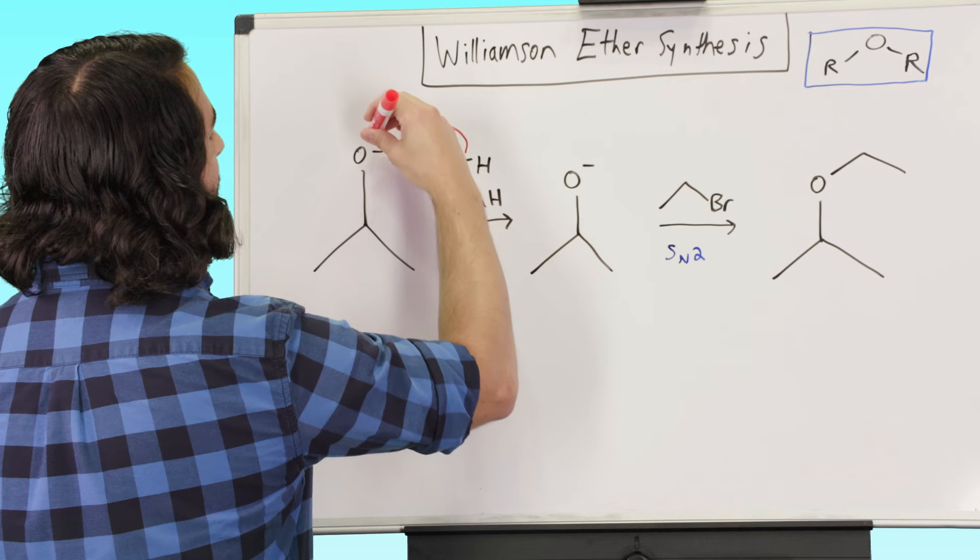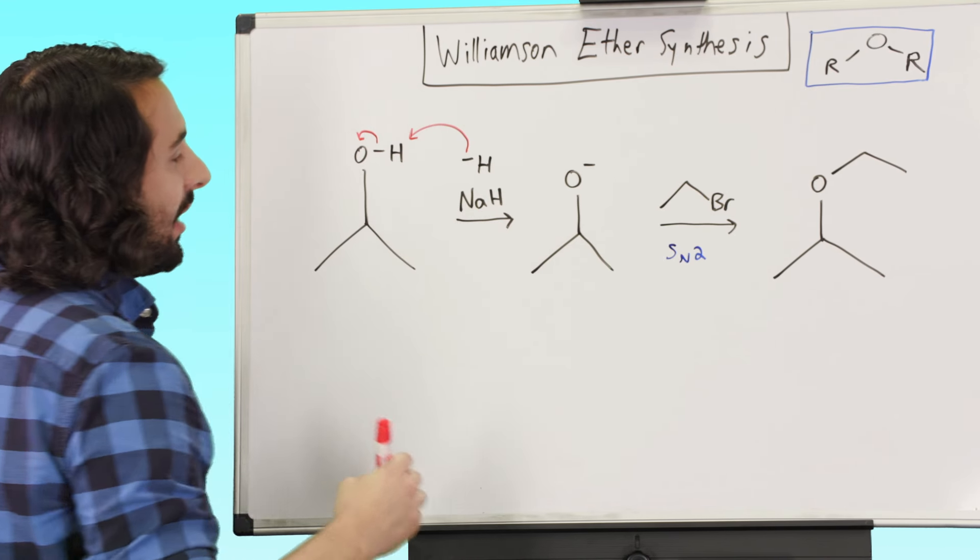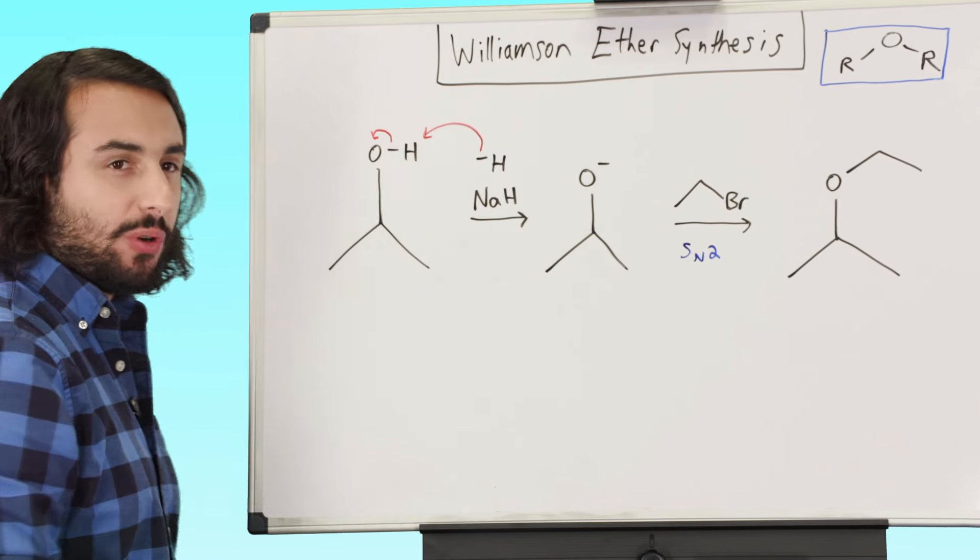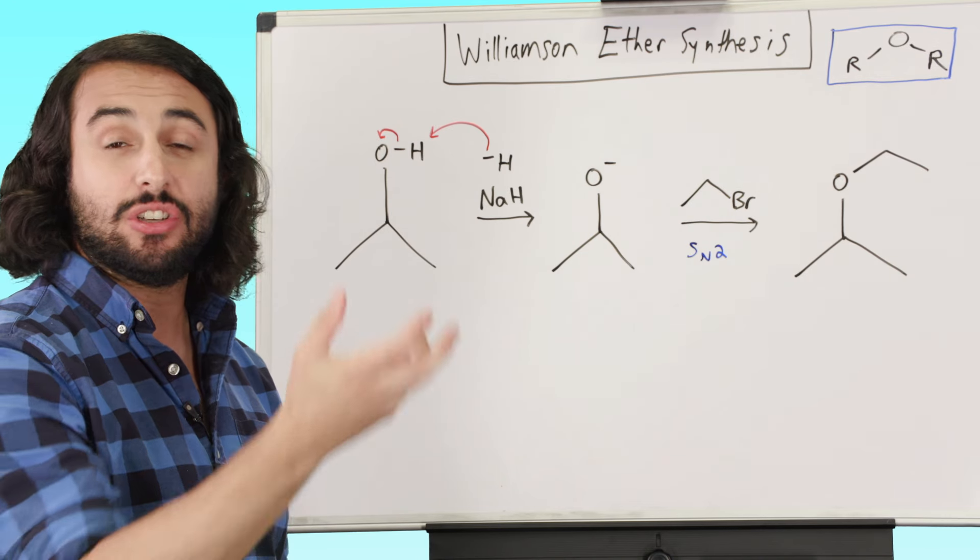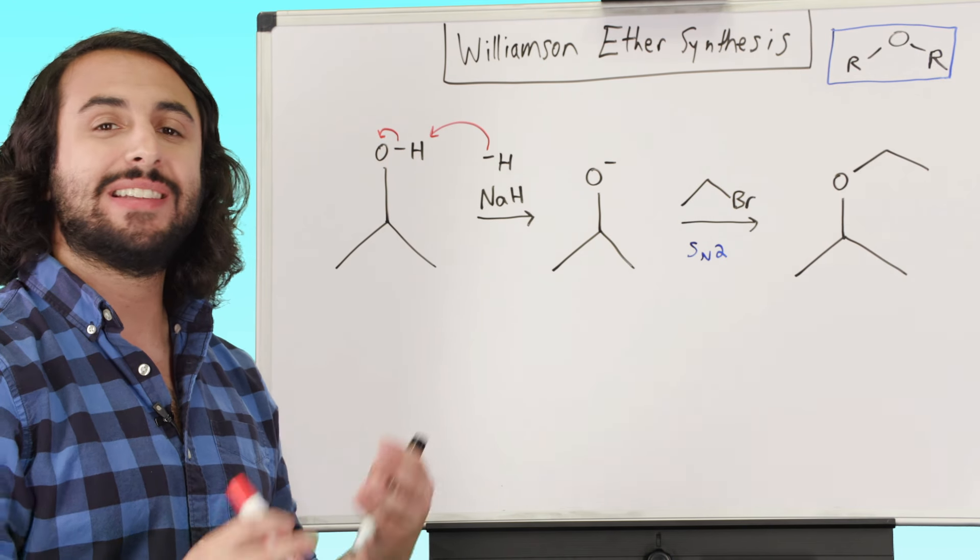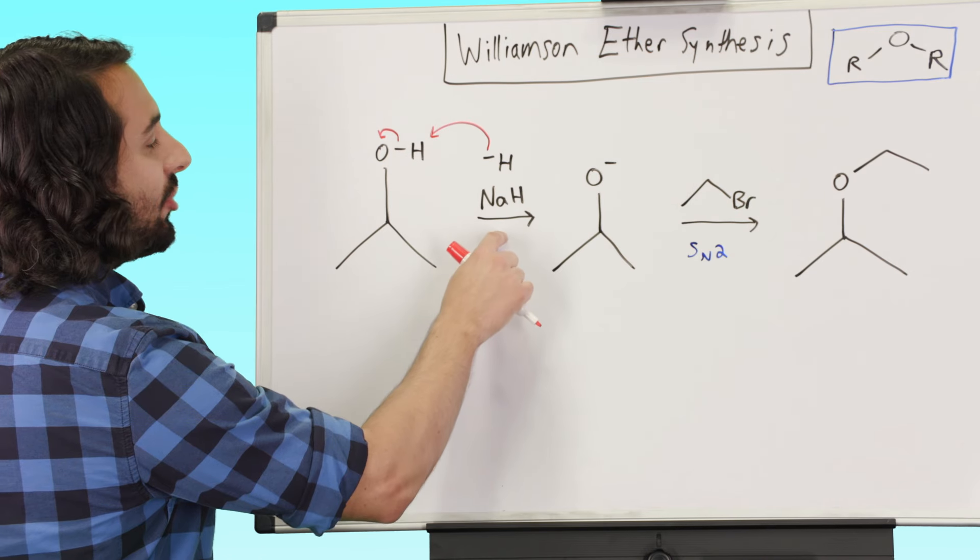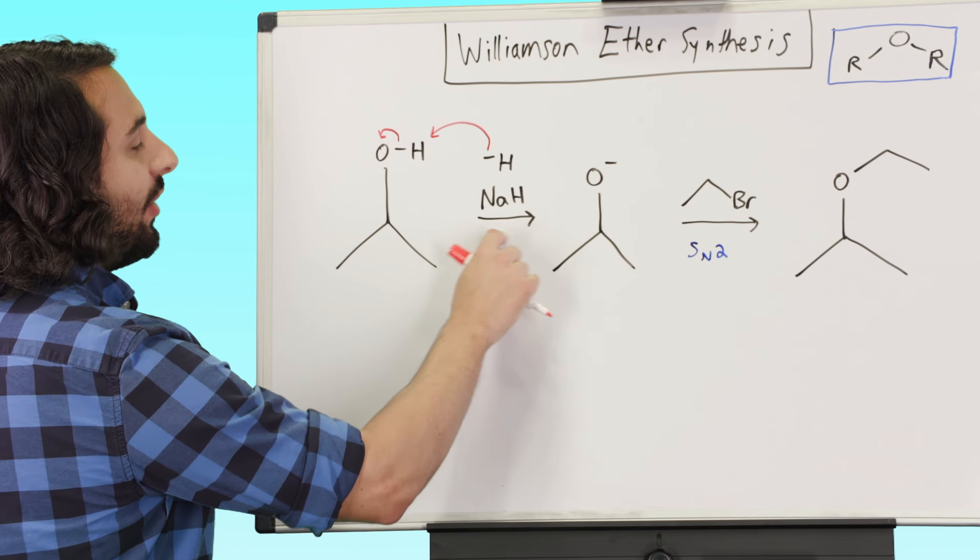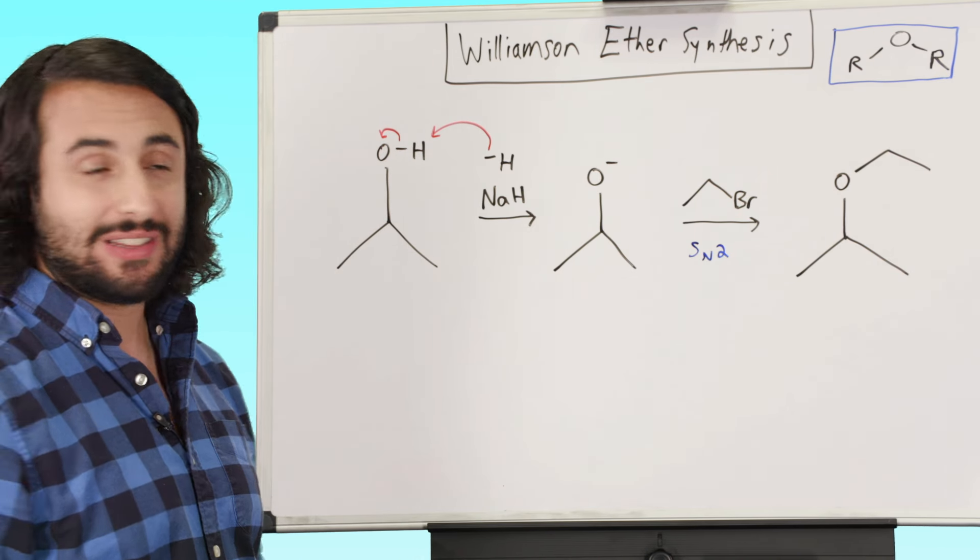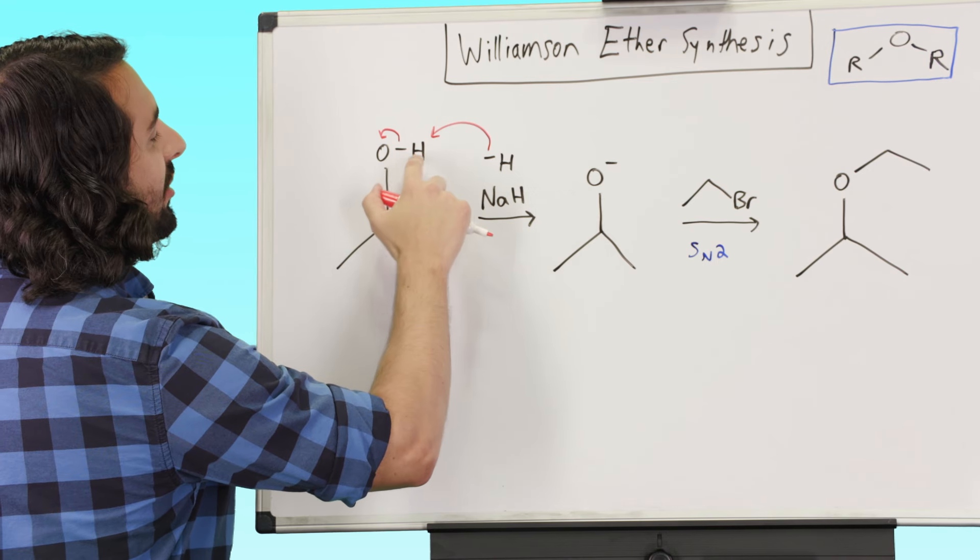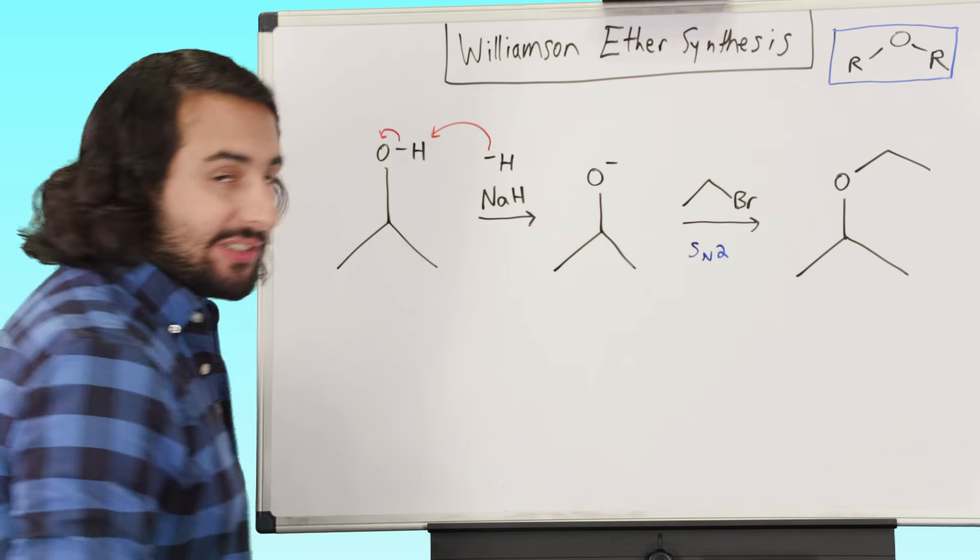And hydride is great at doing that. And what happens is once this hydride grabs that proton, we've got hydrogen gas that's just going to bubble up and leave solution. And it's not going to interfere. It's not going to do any more chemistry. So that's why this is an extremely common base that is used for Williamson ether synthesis. Sodium hydride. Hydride is going to grab that proton. We're left with the alkoxide.